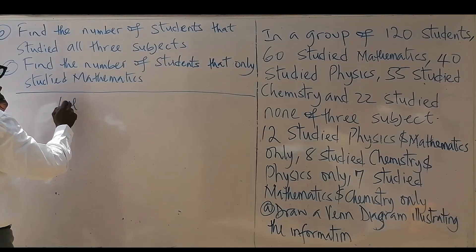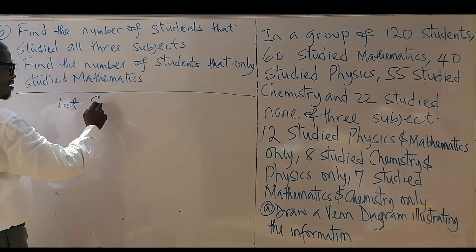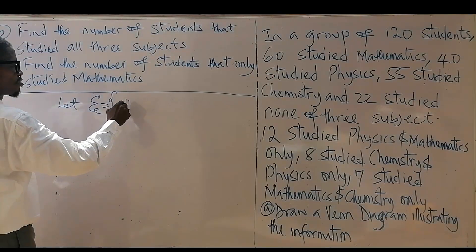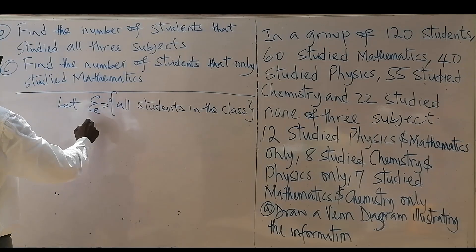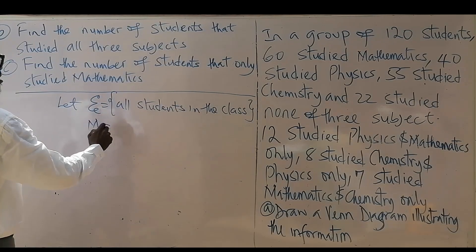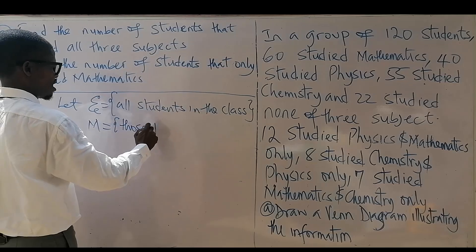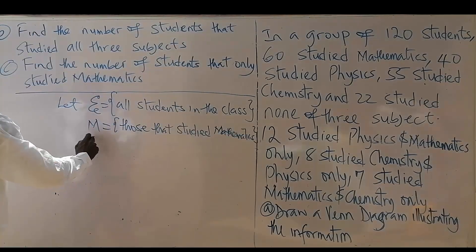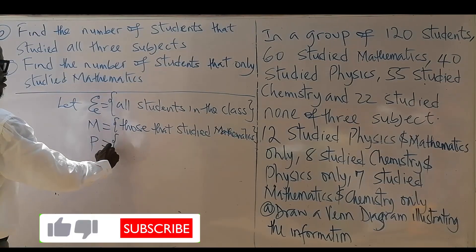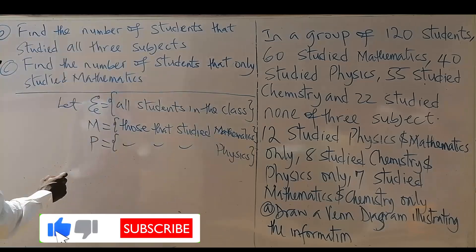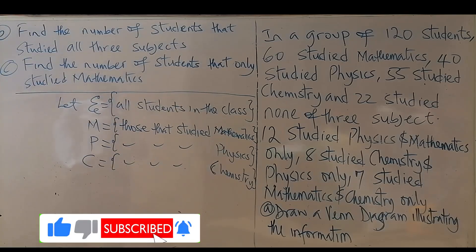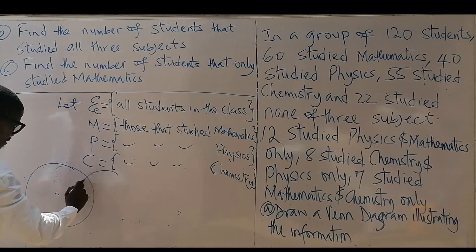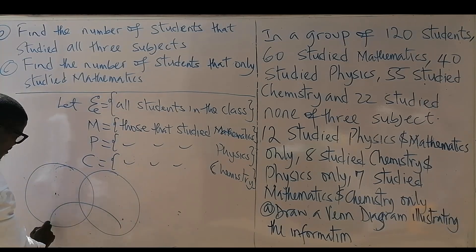Let our universal set be all students. Let M represent those that study mathematics, P for physics, and C for those that study chemistry. The next thing we need to do now is begin to draw the Venn diagram.